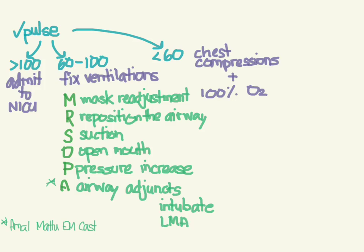An LMA is a laryngeal mask airway — a triangular-shaped device you insert down the throat to ventilate through. This can only be used in babies more than 34 weeks or more than 2,000 grams; there is limited evidence in smaller babies, so just intubate the smaller ones.